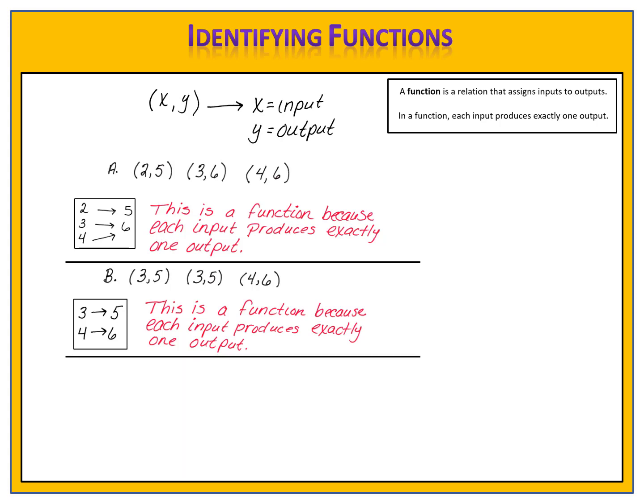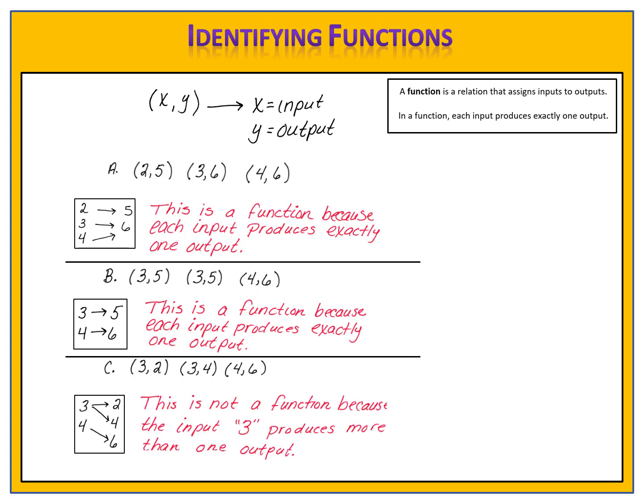Let's look at one final set of ordered pairs. Here we have three pairs: (3,2), (3,4), and (4,6). The input 3 produces the output 2, the input 3 produces the output 4, and the input 4 produces the output 6. Is this relation a function? Remember, each input produces exactly one output in a function. However, here the input 3 produces two different outputs, 2 and 4. Therefore, this relation is not a function, because the input 3 produces more than one output.